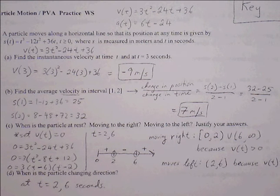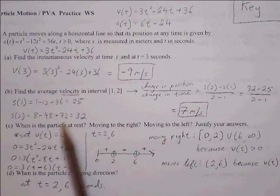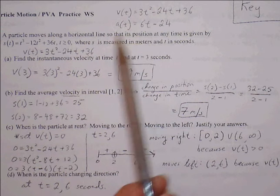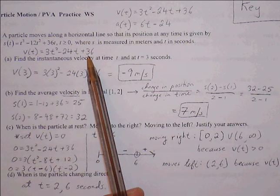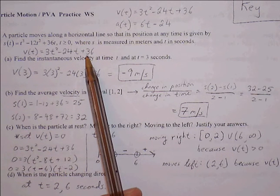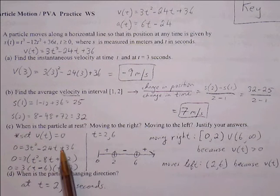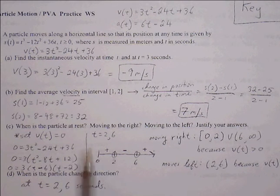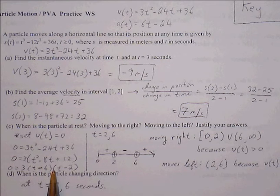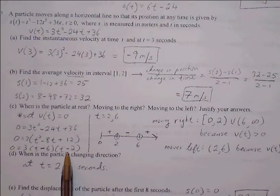Part C: when is the particle at rest? To find when the particle is at rest, this is when velocity equals 0. We set the velocity function equal to 0 and solve for t. Factoring out 3 and continuing, we get 3 times (t minus 6) times (t minus 2).